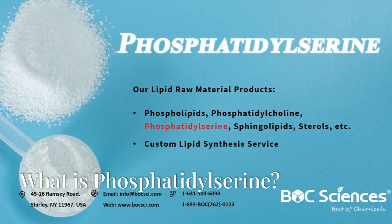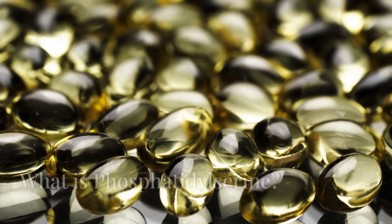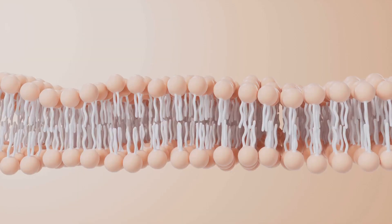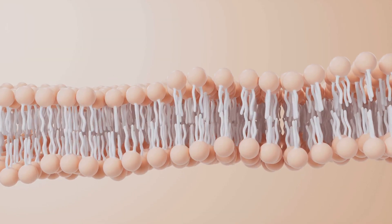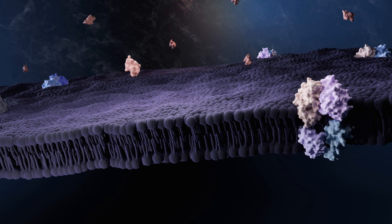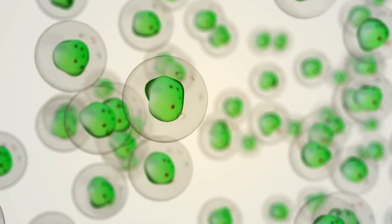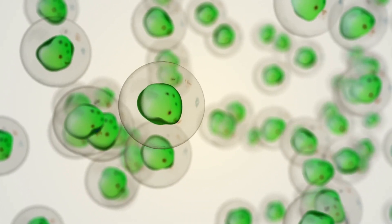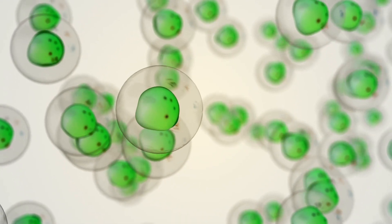What is Phosphatidylserine? Phosphatidylserine, or PS, is a phospholipid that plays a vital role in cell structure and function. As a key component of cell membranes, it is essential for maintaining cellular integrity and enabling effective communication between cells.